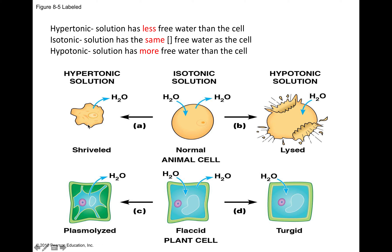If we put a red blood cell in a hypertonic solution — a very salty solution — there is less free water in that solution than in the cell, so the cell will lose water and shrink. If we put that cell in a hypotonic solution like distilled water, which has a very low ion concentration, there will be less free water inside than outside the cell, water will come in trying to equilibrate, and the cells can burst. And if you put it into an isotonic saline solution where the salt concentration inside the cell equals that outside the cell, you won't see a change in the shape of that cell.